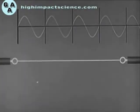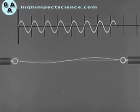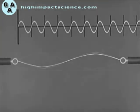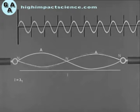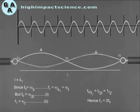First overtone (second harmonic). This is obtained by holding the midpoint of the vibrating string and plucking it at a point a quarter of its length from one end. Here L = λ₁, where λ₁ is the wavelength of the first overtone. Since F = V/λ, the frequency of the first overtone is F₁ = V/λ₁ = V/L. Dividing: F₀/F₁ = L/2L = 1/2, and hence F₁ = 2F₀. This is the second harmonic.